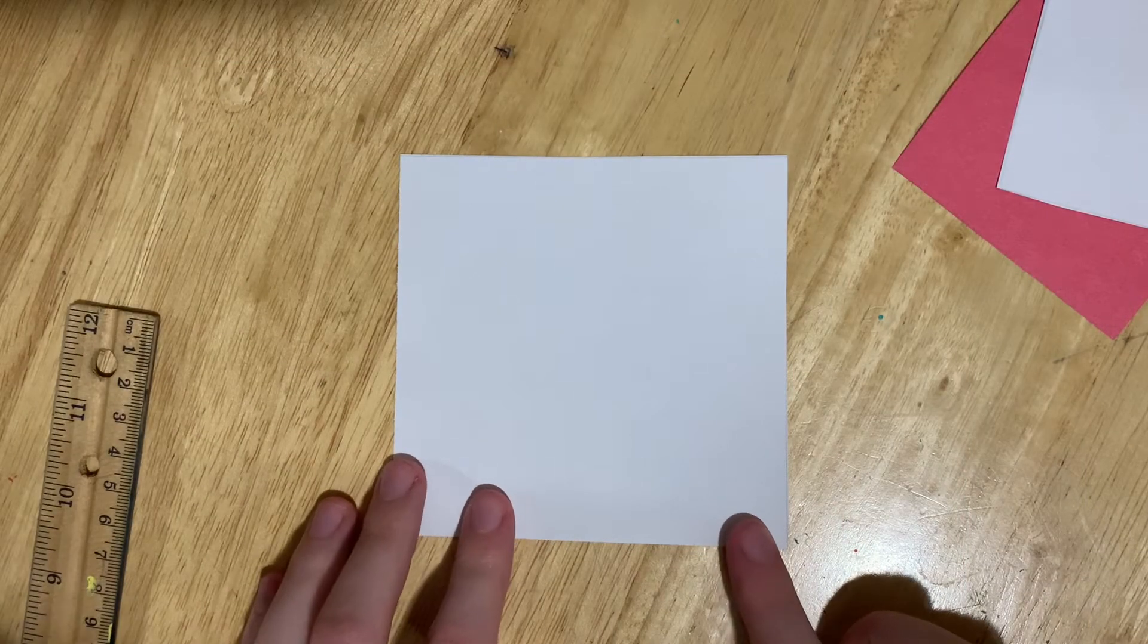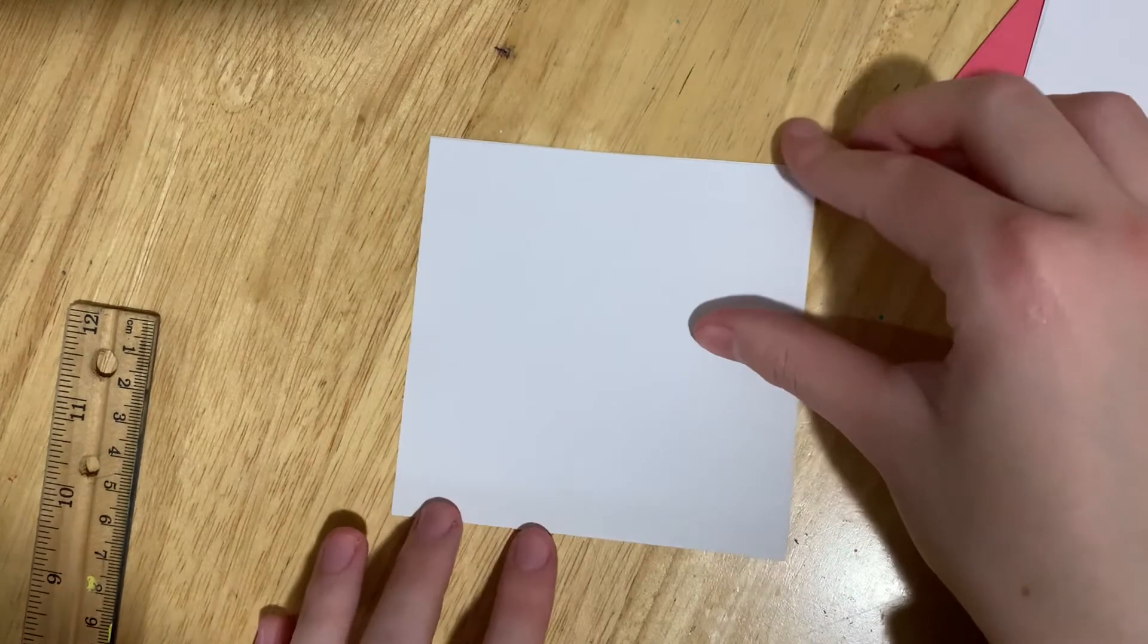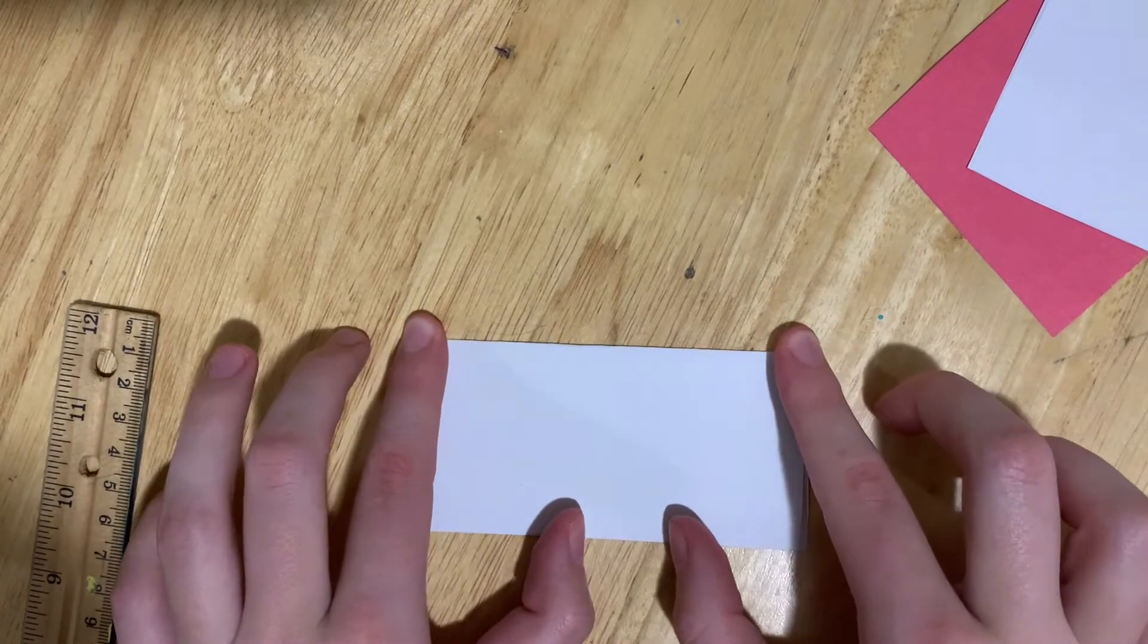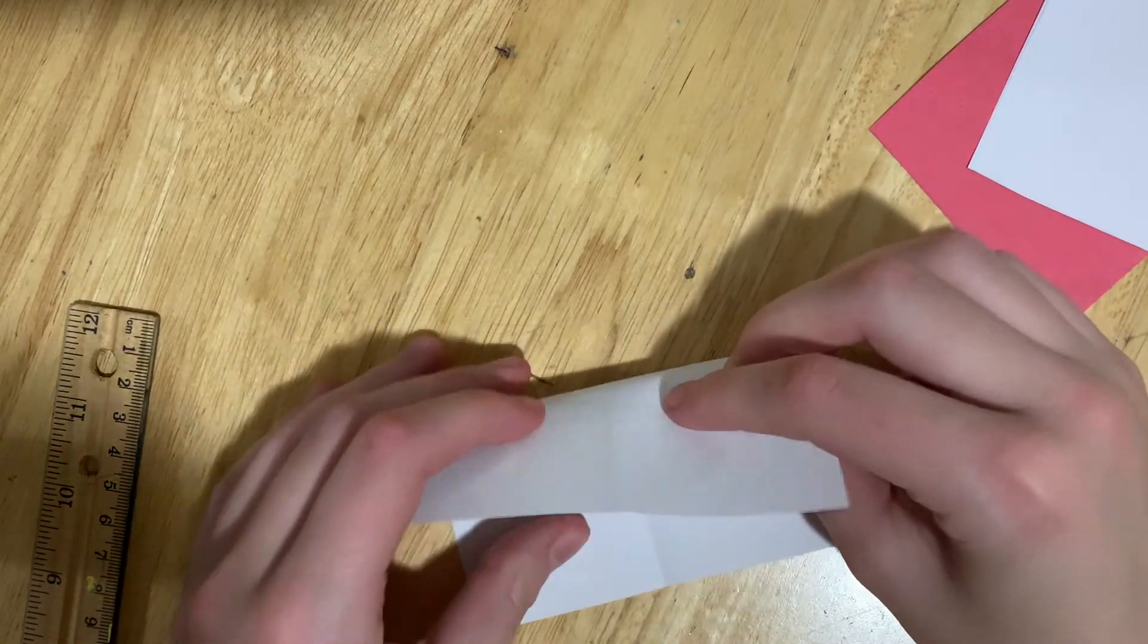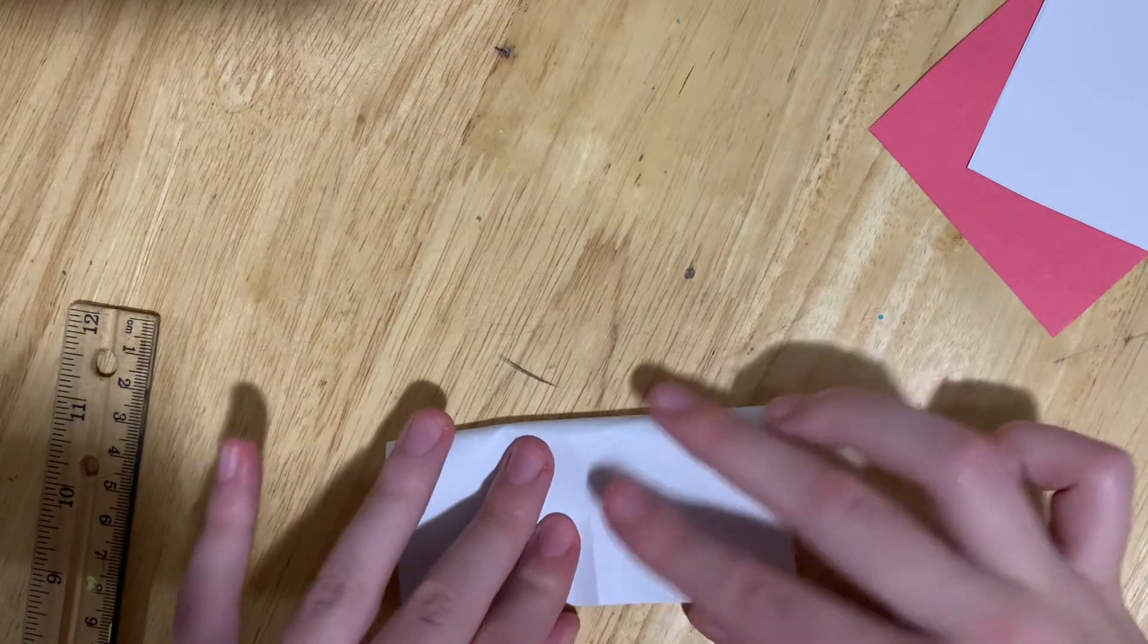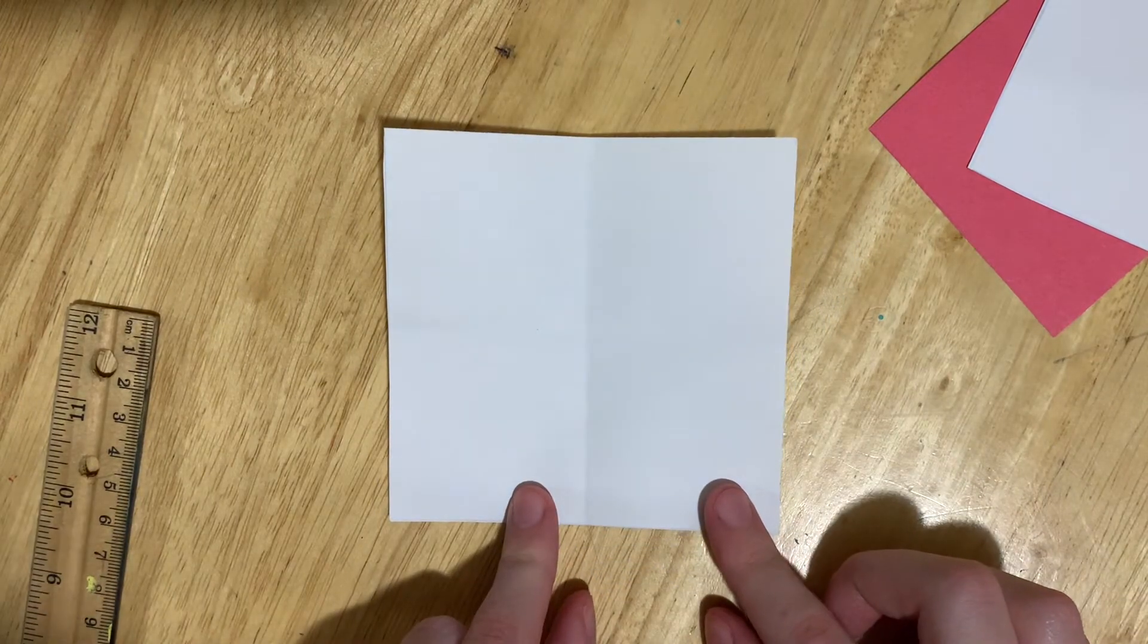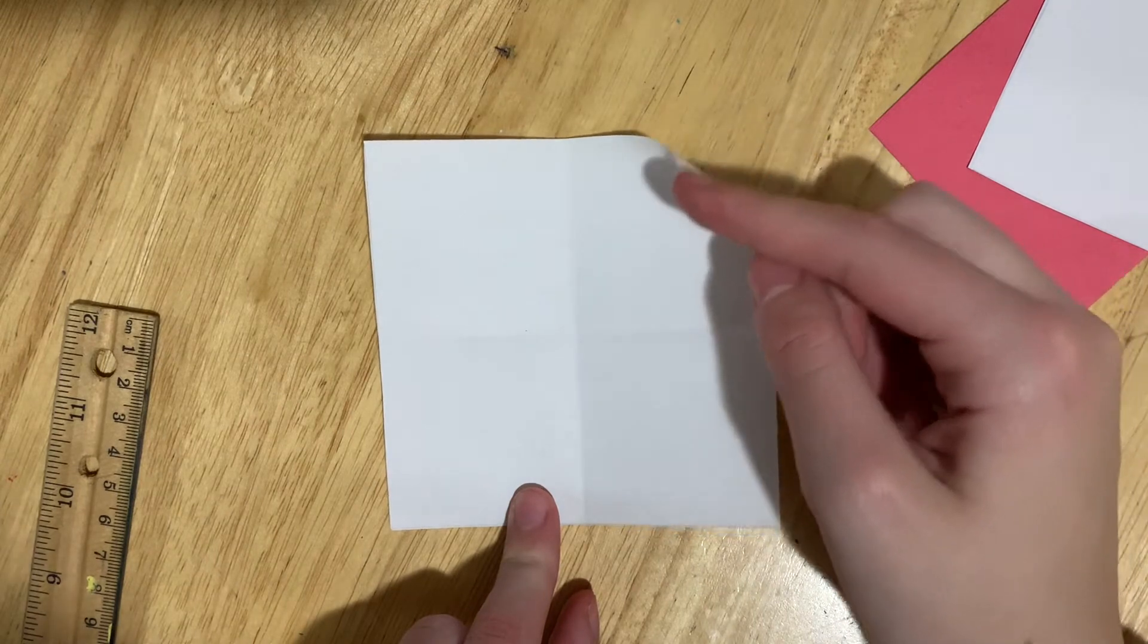First, we'll be using our 11 centimeter square. The first step is folding the paper in half both ways. After you fold the paper in half both ways, you're going to fold the inner peaks into the middle.